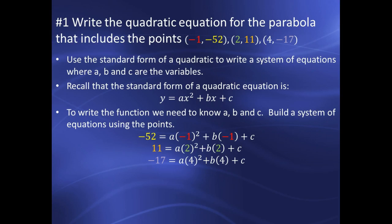The first question was writing a quadratic equation for a parabola that included three points. To do this you need to know the standard form of a quadratic equation, that is y equals ax squared plus bx plus c. In this case we need to know what a, b, and c are in order to write our equation. We don't know what they are. In this case those are our variables. What we do know are three values of x and three values of y.